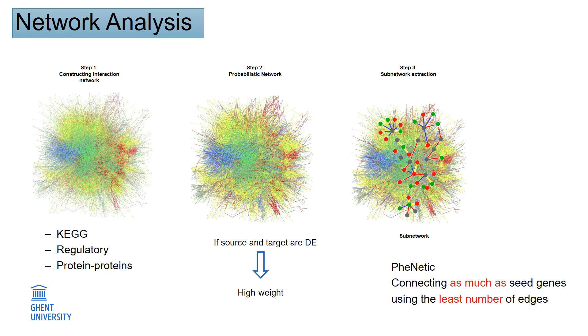Then, we made this network probabilistic using expression data. Then, we mapped the group A, B, and C, means restored genes, non-restored genes, and compensatory genes on the interaction network using Heinz.